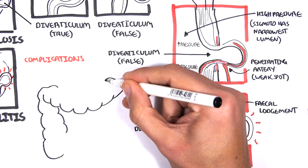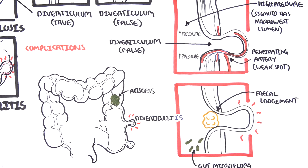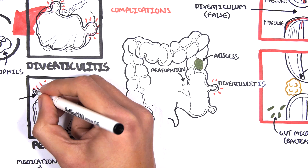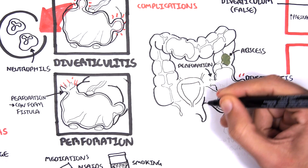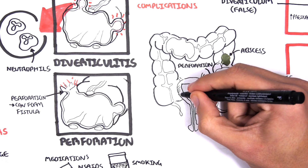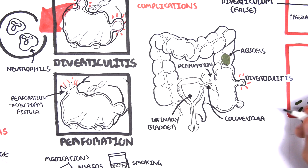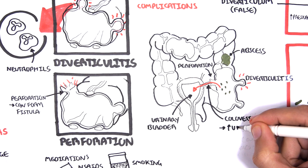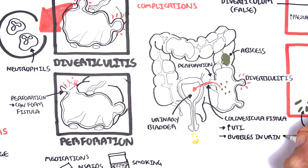The complications of diverticular disease include abscess formation, diverticulitis itself, and perforation — where a diverticulum can perforate and lead to fistula formation. A fistula is a tunnel formed between two hollow organs. In the case of a perforated diverticulum, it can form a colovesicular fistula with the urinary bladder. When this happens, bacteria from the colon can enter the bladder causing UTIs, and gas produced in the colon can lead to bubbles in the urine — known as pneumaturia.